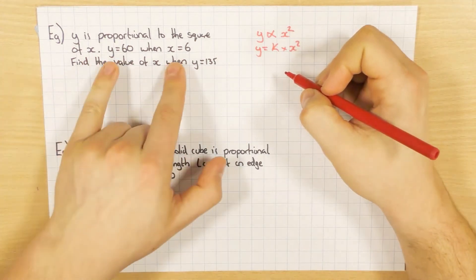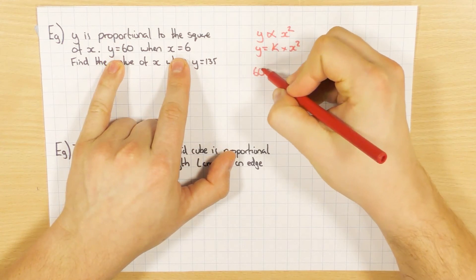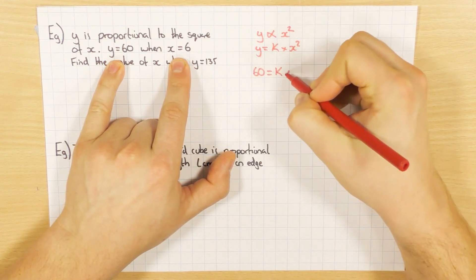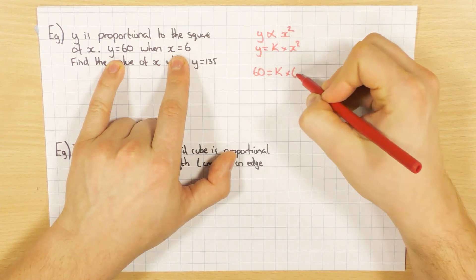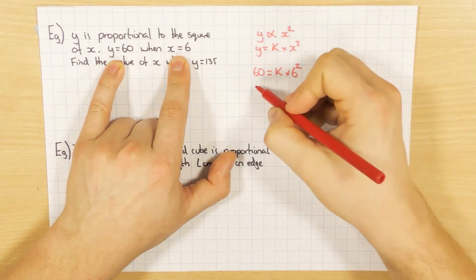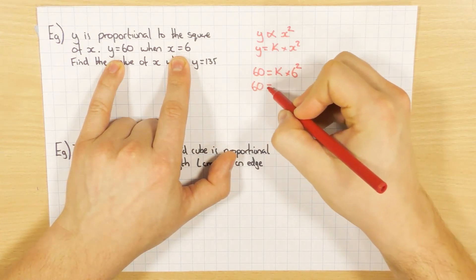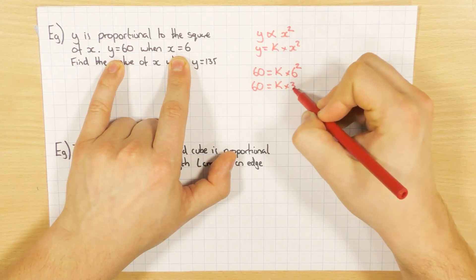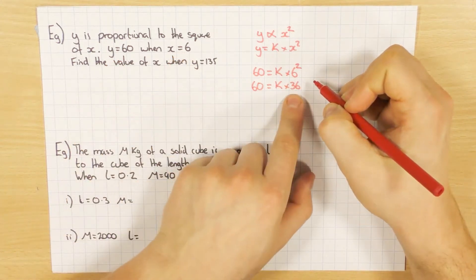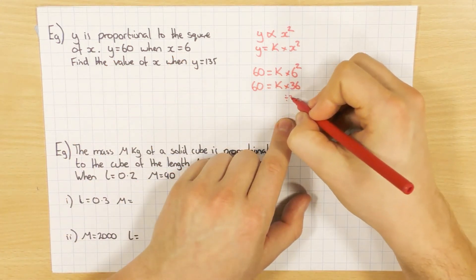Now I've still been given two values to substitute in. So y is 60 equals the constant times x squared, while x is 6 squared. So 60 equals k times 36. And again I'm just going to rearrange this by dividing by 36.